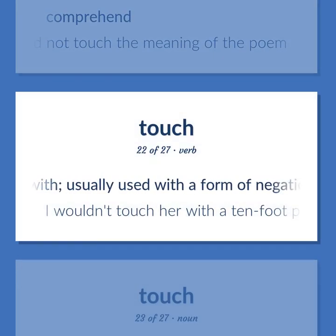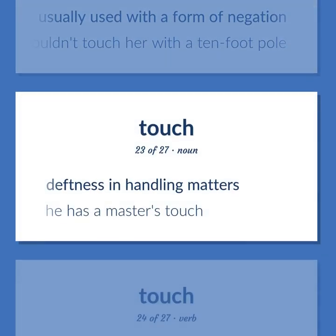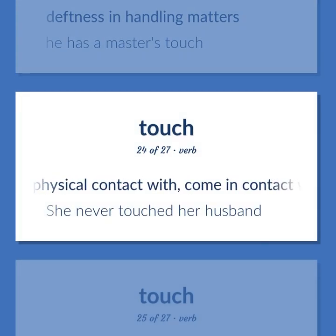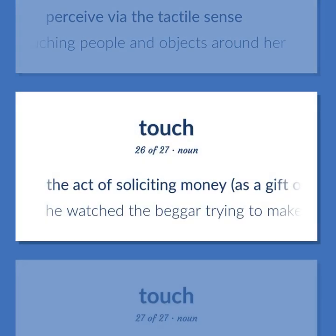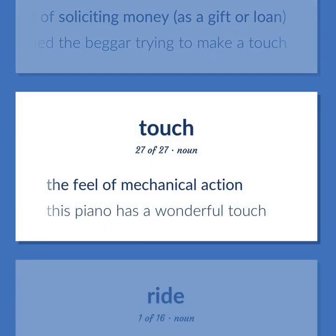Touch: Deal with, usually used with a form of negation — I wouldn't touch her with a ten-foot pole. Deftness in handling matters — he has a master's touch. Make physical contact with, come in contact with — she never touched her husband. Perceive via the tactile sense — Helen Keller felt the physical world by touching people and objects around her. The act of soliciting money as a gift or loan — he watched the beggar trying to make a touch. The feel of mechanical action — this piano has a wonderful touch.